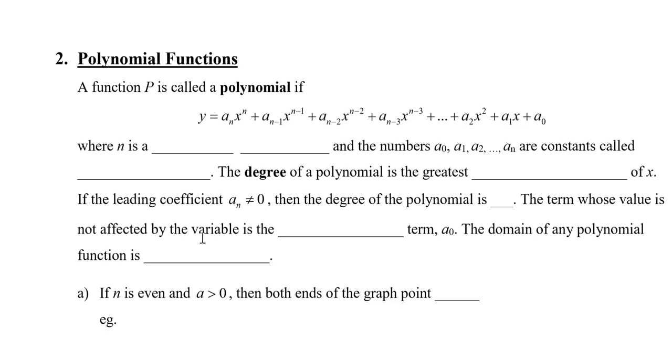Polynomial functions. A function P is called a polynomial if it looks something like this. I know this looks really complicated, but the n, if you look, the n are where the exponent is, but it also represents the subscript for the coefficient. So n in a polynomial has to be a whole number.